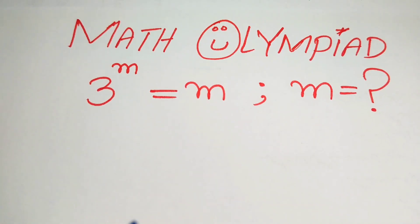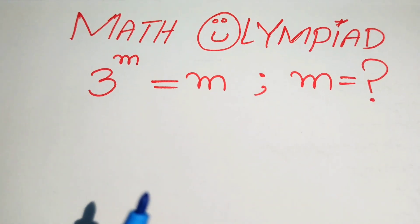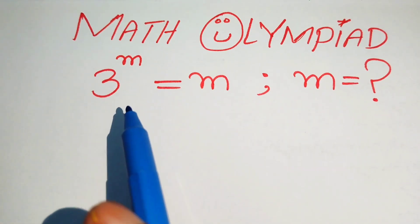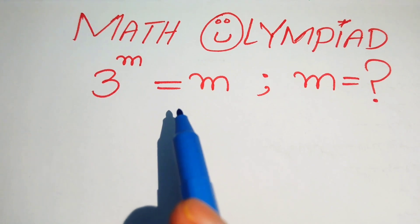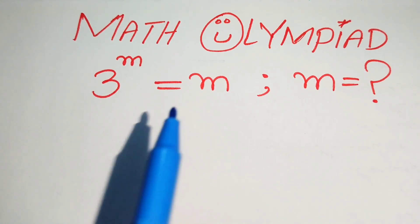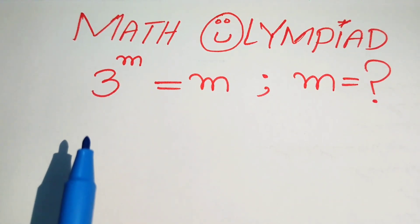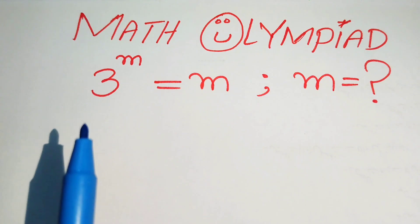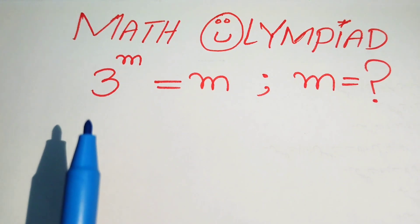Hello everyone, welcome. We are going to solve this math or lumped algebra problem. Here we have 3 to the power of m equals m, and in this question we find or solve this problem for the values of m.